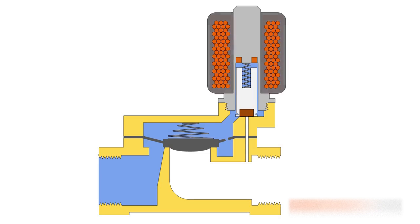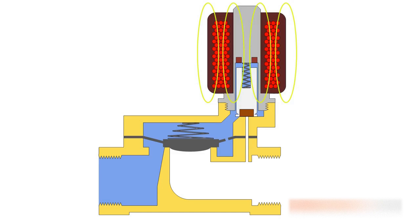As soon as an electric current flows through the coil, a magnetic field is created. This magnetizes the plunger and pulls it upwards.